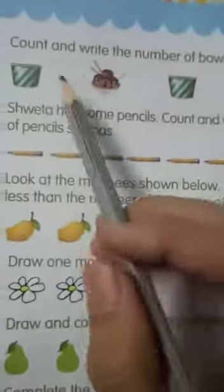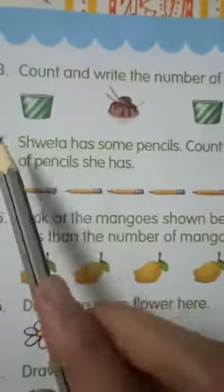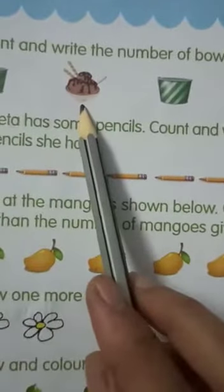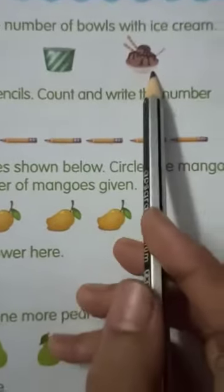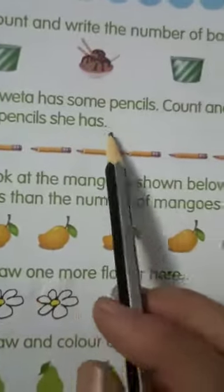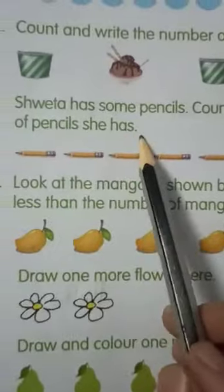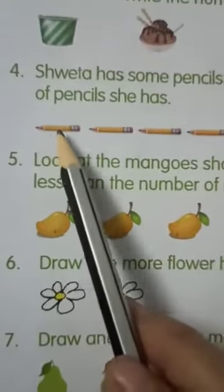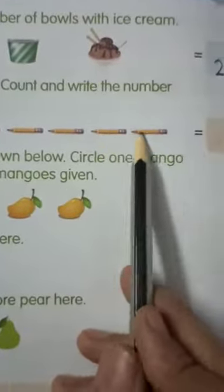The next question is, count and write the number of bowls with ice cream. Here it is an empty one. Here we have a bowl with ice cream. Here this is also an empty and this is with ice cream. So, 2 bowls with ice cream. The next question is, Shweta has some pencils. Count and write the number of pencils she has. Let's count the pencils. 1, 2, 3, 4, 5, 6, 7, 8.